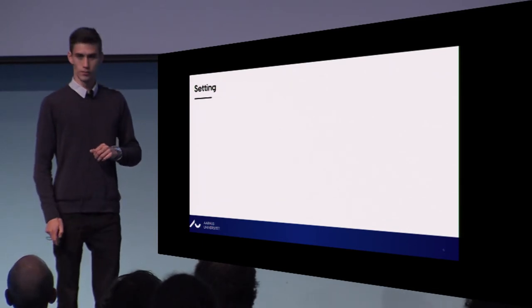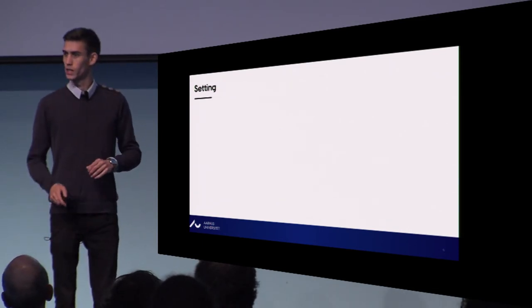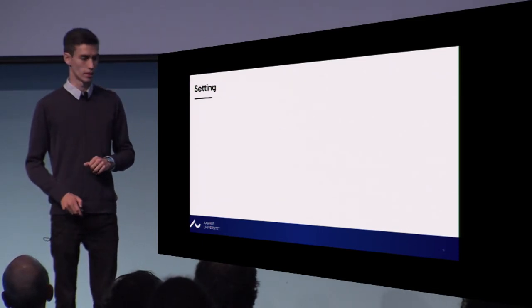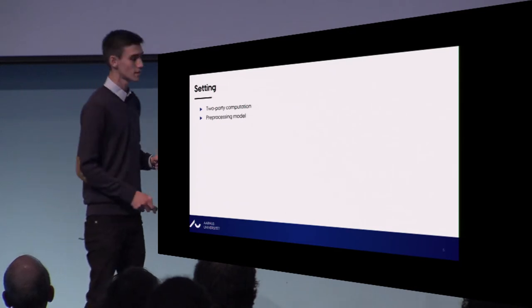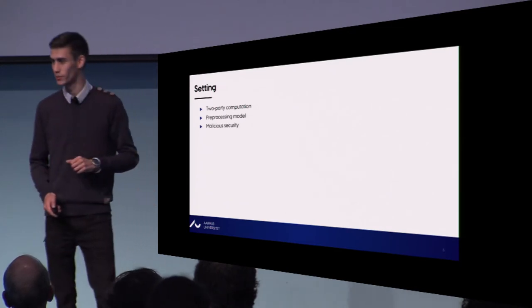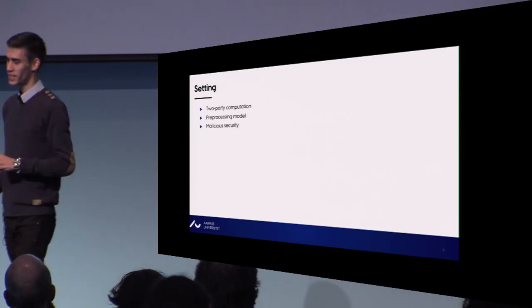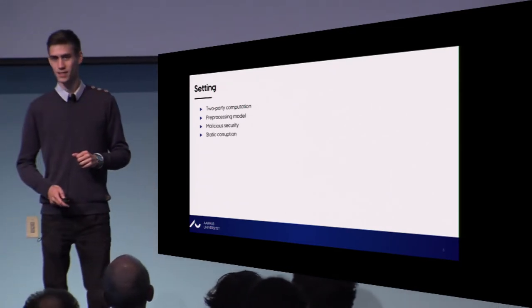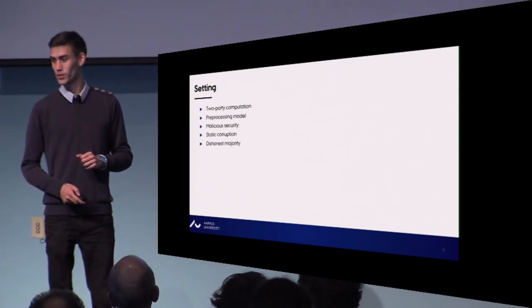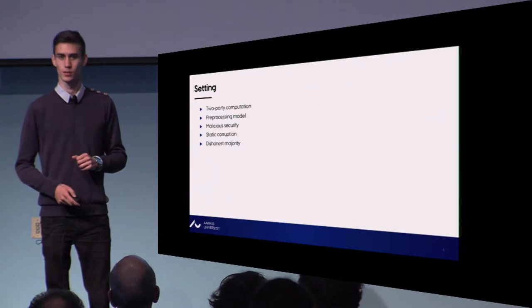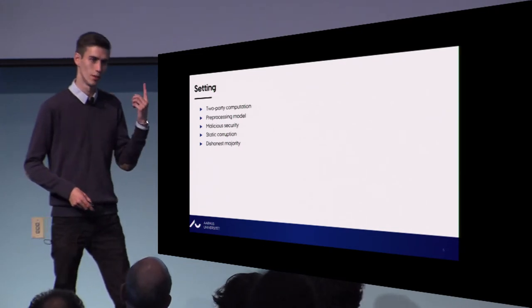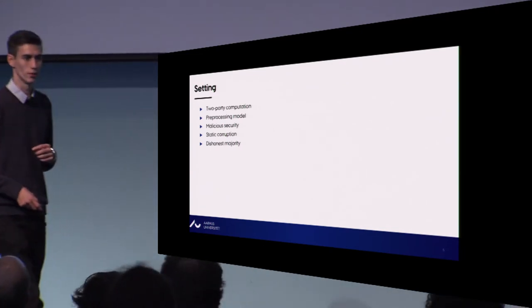To sum up more formally: we are doing two-party computation in the preprocessing model, with malicious security, static corruption, and dishonest majority — so one party can be corrupt.